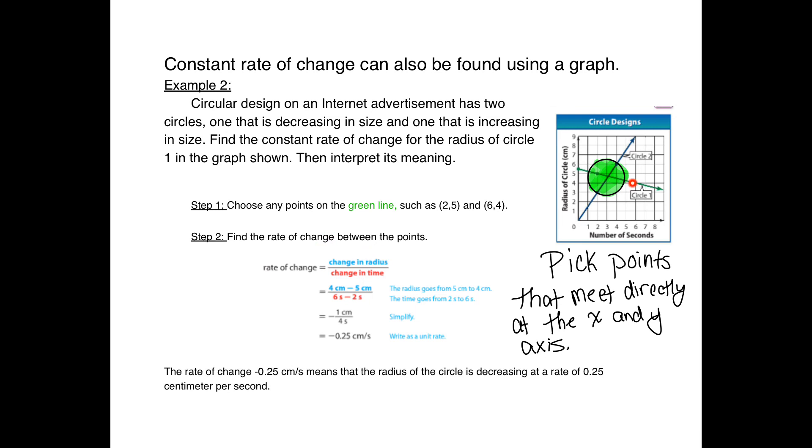We're talking about the change in radius compared to the change in time. Our time is our x-axis and our radius is our y-axis. Pick your points - any points on the green line will work, but pick points that are on the x and the y. Then you're just going to subtract them and simplify, which means divide. Really, they're asking you to divide and get one as your denominator.